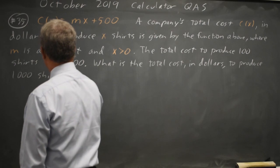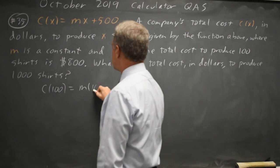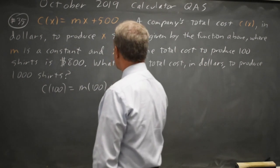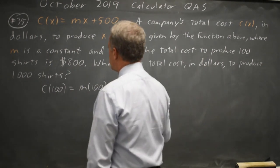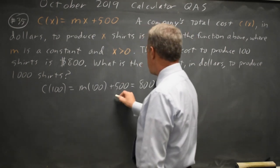So, c of 100 is m times 100 plus 500 equals $800. And we're going to solve for m.